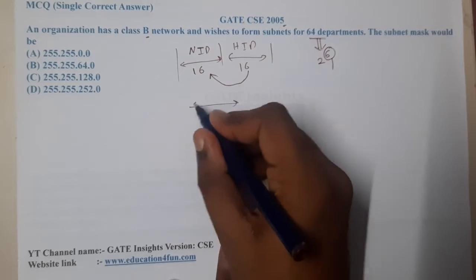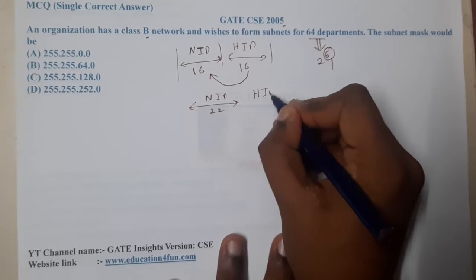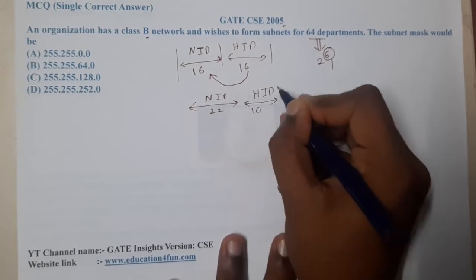So now the new network ID will be 22 and the host ID will be 10.